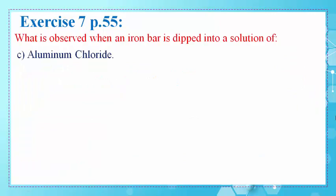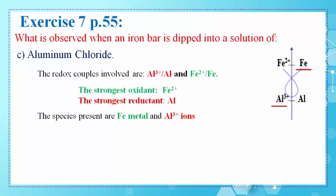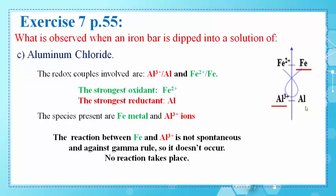In part C, what is observed when an iron bar is dipped into a solution of aluminum chloride? The redox couples involved are Al3+/Al, in the aluminum chloride solution, and Fe2+/Fe, due to the presence of the iron bar. We classify these two redox couples on an axis. The strongest oxidant would be Fe2+, which does not exist in the system, and the strongest reductant would be Al, which also does not exist. Therefore, the reaction between Fe and Al3+ is not spontaneous — it is against the gamma rule, so no reaction takes place.